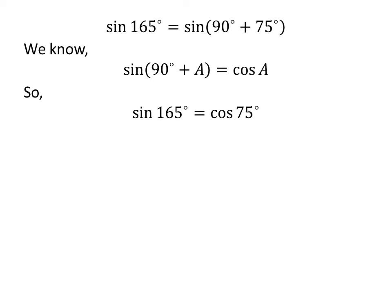So, sine of 165 degrees is equal to cosine of 75 degrees. Again, 75 degrees is equal to 30 degrees plus 45 degrees. So, sine of 165 degrees is equal to cosine of 30 degrees plus 45 degrees.